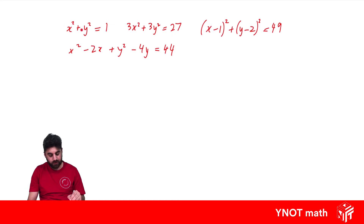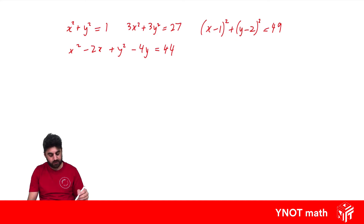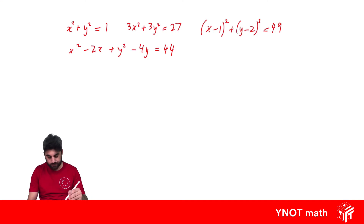These both have a coefficient of 1, these both have a coefficient of 3, and when you square the brackets you get x squared and y squared with coefficients both equal to 1. These are all examples of circles. If the coefficients were different, you'd actually get an ellipse, not a circle.